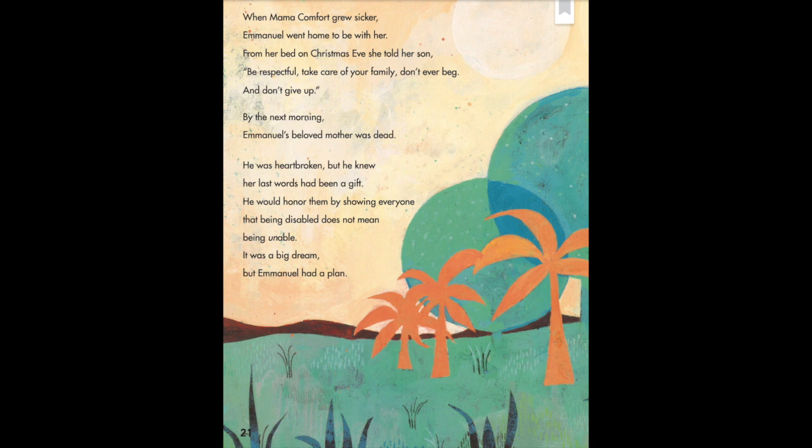Wow, Emanuel really does do a lot of things that would be difficult for a person with a disability, but he never gives up. He doesn't let his disability stop him from what he wants to do. When Mama Comfort grew sicker, Emanuel went home to be with her. From her bed on Christmas Eve, she told her son: be respectful, take care of your family, don't ever beg, and don't give up. By the next morning, his mother was dead. He was heartbroken, but he knew her last words had been a gift. He would honor them by showing everyone that being disabled does not mean being unable.